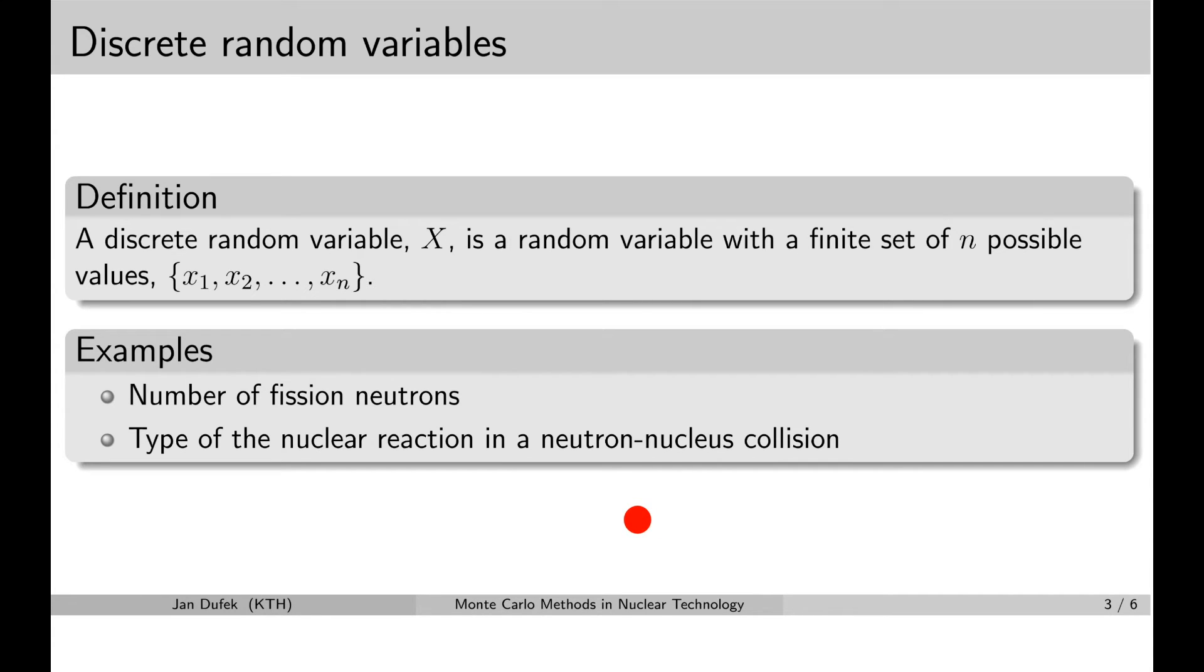So, what can happen? The neutron can either scatter or it can be captured and uranium-236 would be produced or it can be absorbed and it can cause fission. So, then we would have fission reaction and the nucleus would split.